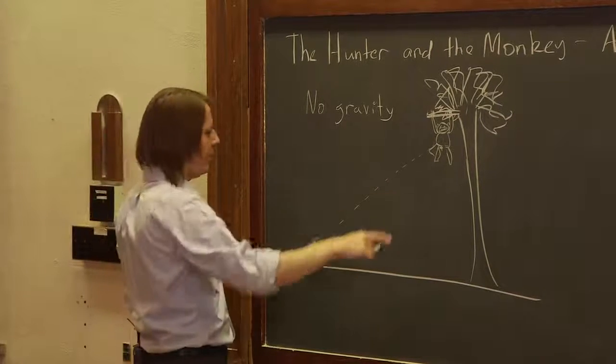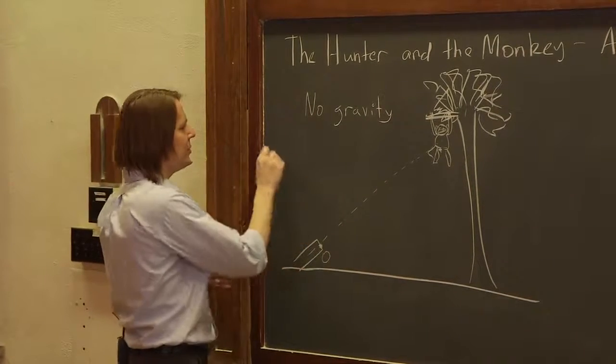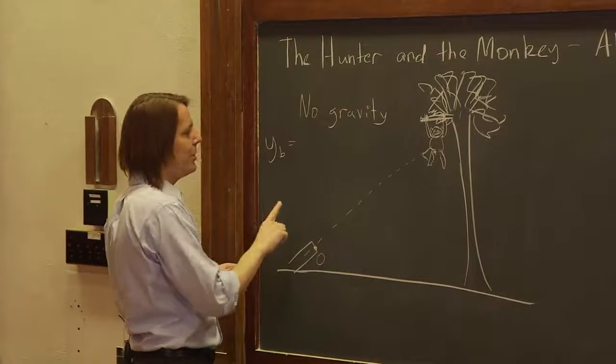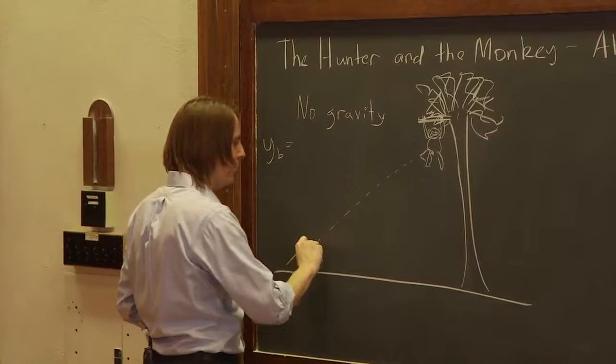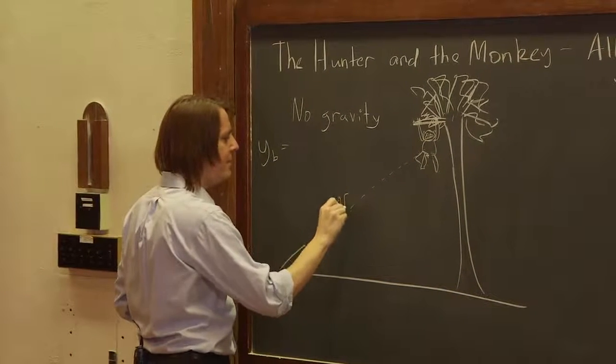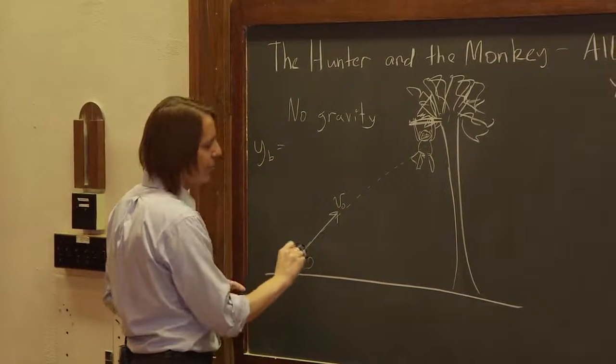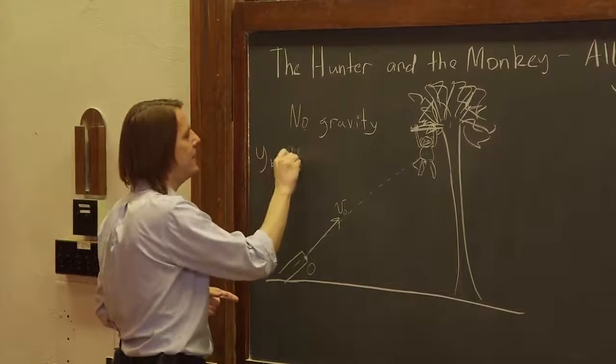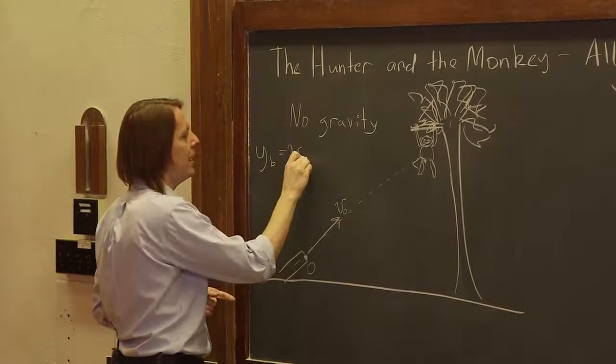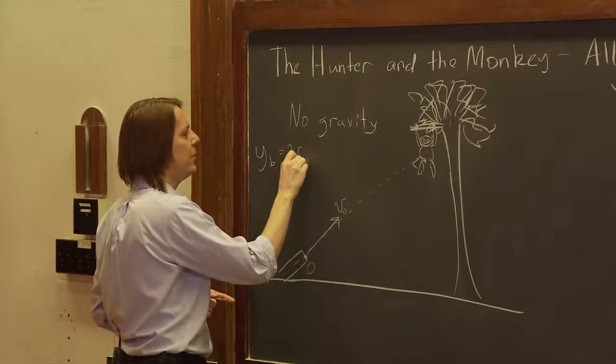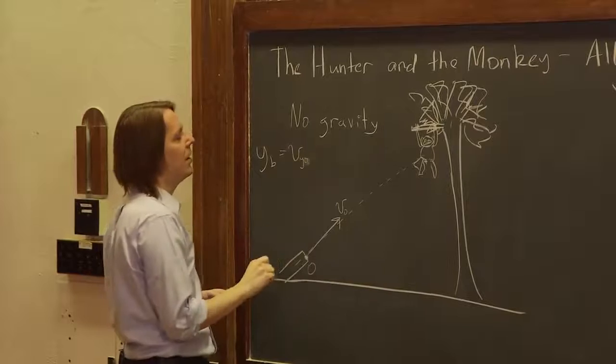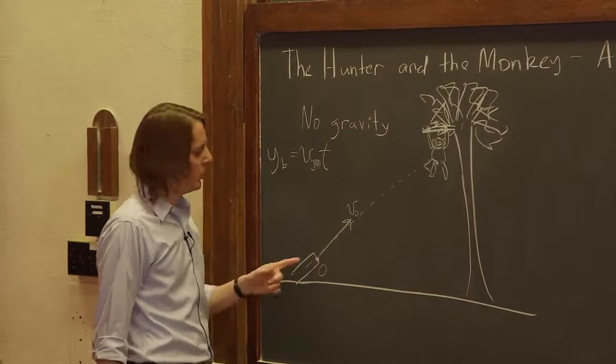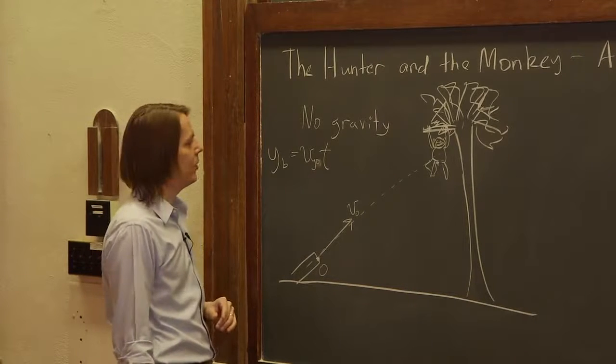So let's think then, what would the kinematics here be? Well, if we think of the y position of the bullet, yb for y bullet, it's going to have some initial y velocity because we know the bullet comes out with some speed v-naught and it'll have an x component and a y component and a direction. So we know that it's going to have some vy-naught and its height or the y position of the bullet in time is going to evolve like this: vy-naught times t. There's no initial position and there's no acceleration because there's no gravity.